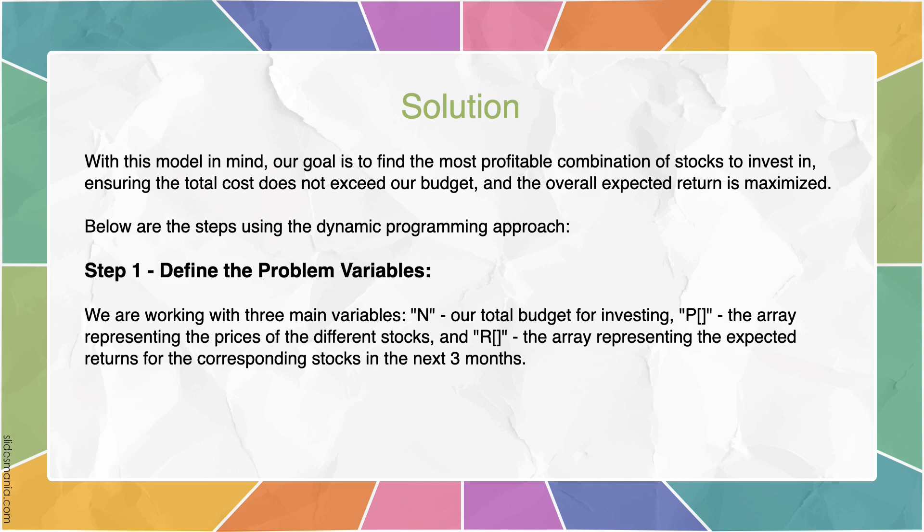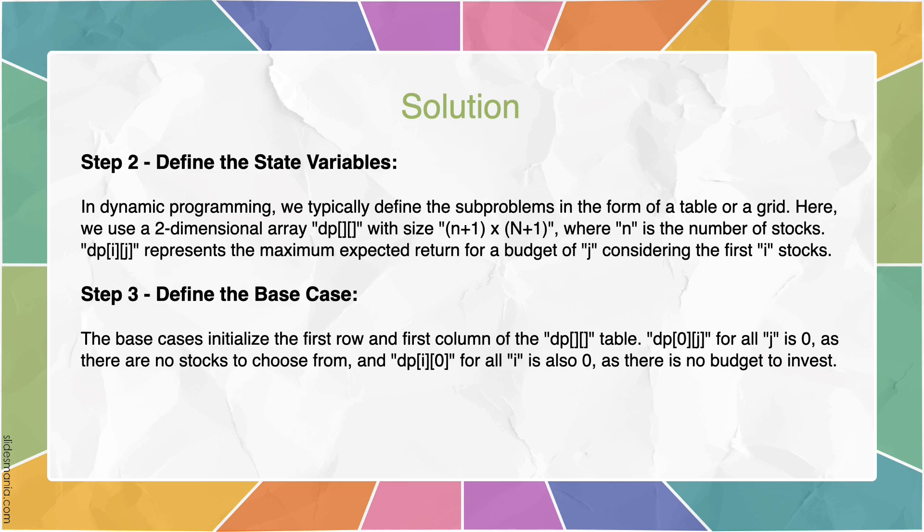Here are our steps using dynamic programming approach. In the first step, we define the problem variables. We are working with three main variables in our case. N is our total budget for investing. Array P is the array representing the prices of different stocks, and Array R is the array representing the expected return for corresponding stocks in the next three months. In our step 2, we define the state variables.